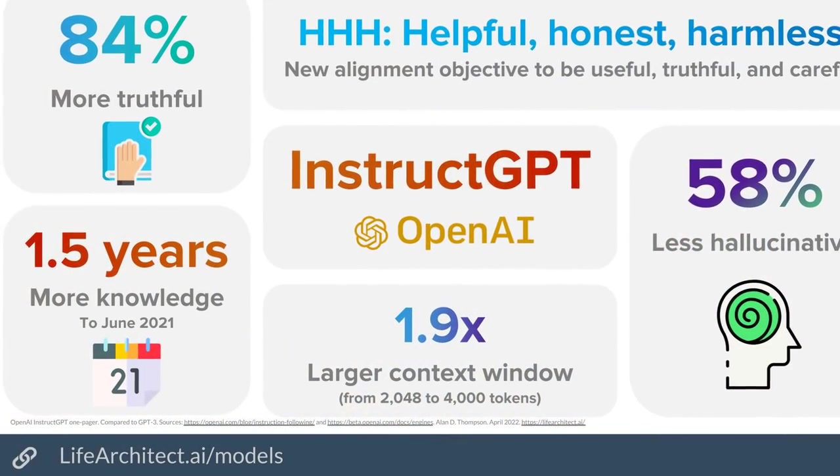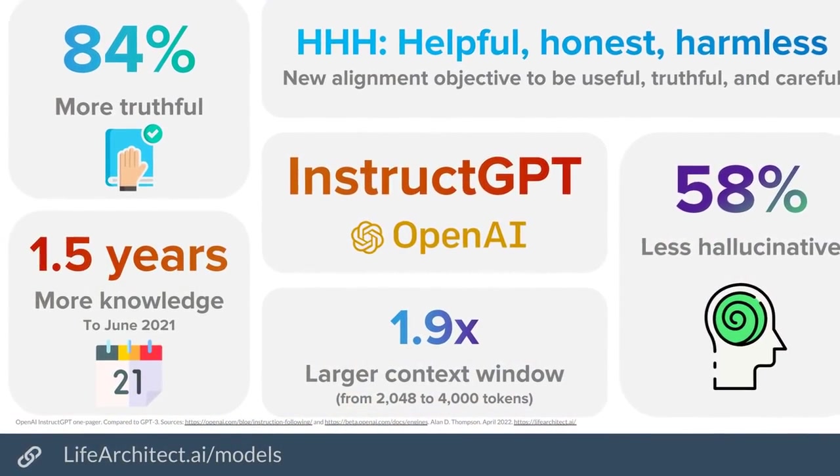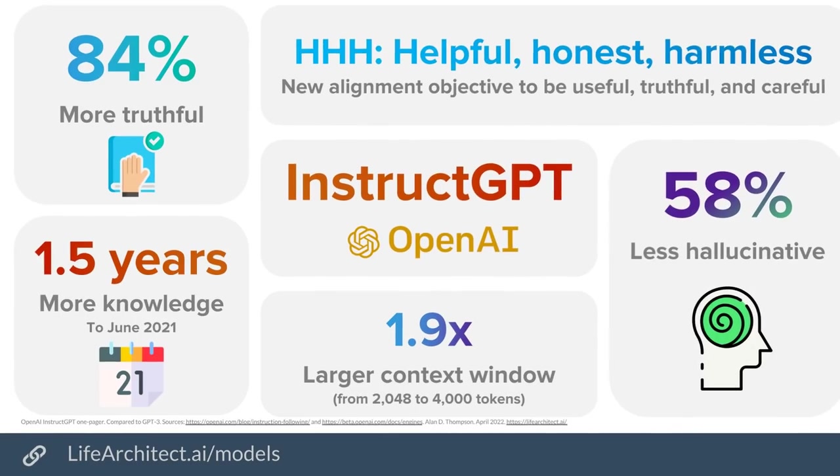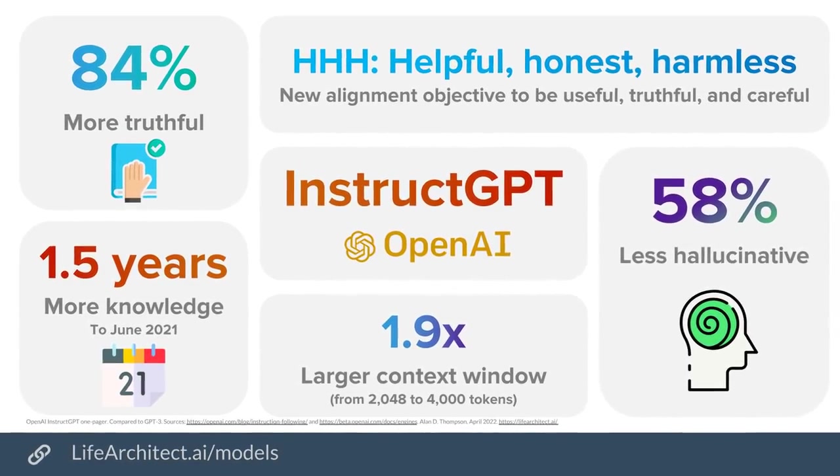They want to make sure that AI is aligned with us. So this alignment objective, Triple H, is to be helpful, honest, and harmless. I've said useful, truthful, and careful. It was coined by Anthropic. But I'm going to say that OpenAI's InstructGPT is actually meeting this requirement — this alignment guideline — really, really well. It is a useful model. It's telling the truth more often than not, 84% more truthful, and it's being very careful. So where you find DaVinci Classic just going off into these tangents, spinning falsehoods all over the place, that happens less frequently with InstructGPT. We'll have a look at that in the demonstration a little bit later. As I said, this is the default engine now.